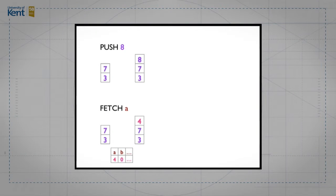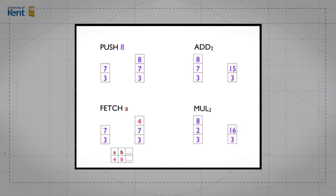Then we have two operations for performing arithmetic. We have add, which takes the top two elements of the stack, pops them, adds them together and pushes the result. So if we have eight and seven on top of the stack, we pop those, add them, get 15, and push that back. In the same way, multiplication pops the top two values — if we have eight and two we replace them with their product, 16.